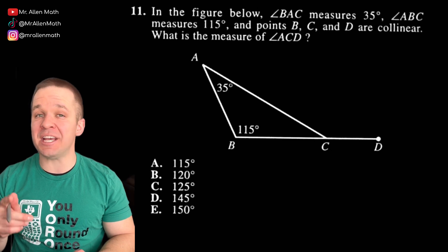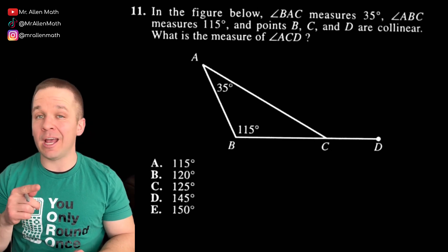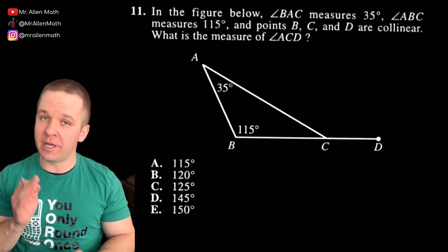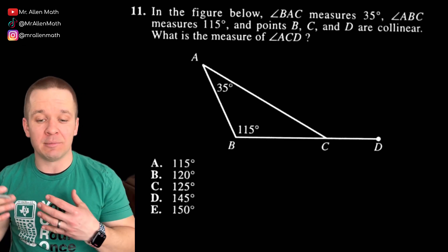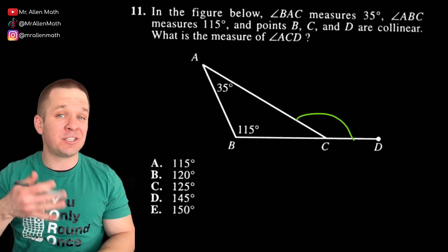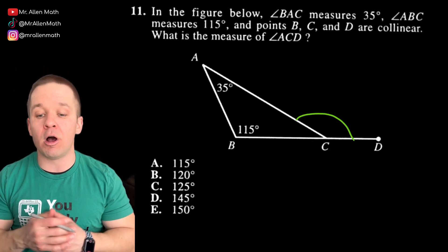In the figure below, angle BAC measures 35 degrees, angle ABC measures 115 degrees, and points B, C, and D are collinear. That just means that they lie on the same line. What's the measure of angle ACD? So let's mark that. That is referred to as my exterior angle, or an exterior angle of the triangle.